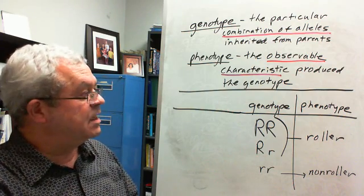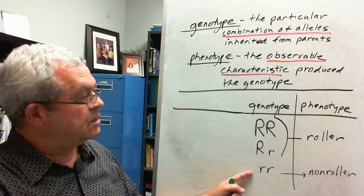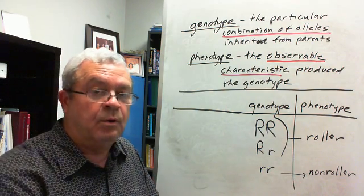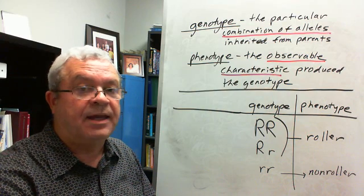The little r is the recessive allele. So, all of us are one of these. And we're all one of these as well. You're either a roller, you can do this, or you can't.